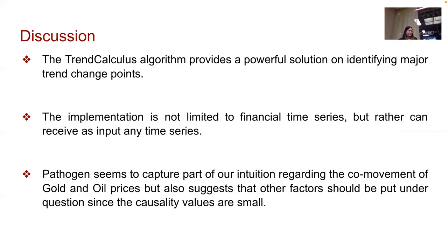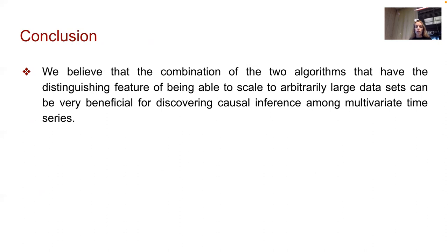To summarize: the trend calculus algorithm provides a powerful solution for identifying major trend change points, and its implementation is not limited to financial time series. Pathogen seems to capture part of our intuition regarding the co-movement of gold and oil prices, but also suggests that other factors should be considered since the causality values are small. The combination of both algorithms — which can scale to arbitrarily large data sets — can be very beneficial for discovering causal inference among multivariate time series.